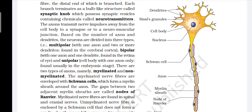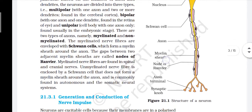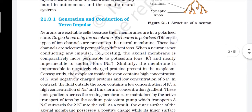Each branch terminates as a bulb-like structure called synaptic knob, which possesses synaptic vesicles containing chemicals called neurotransmitters. The axon transmits nerve impulses away from the cell body to a synapse or neuromuscular junction. Based on the number of axons and dendrites, neurons are divided into three types: multipolar (with one axon and two or more dendrites, found in the cerebral cortex), bipolar (with one axon and one dendrite, found in the retina of the eye), and unipolar (cell body with one axon only, found usually in the embryonic stage). There are two types of axons: myelinated and non-myelinated. Myelinated nerve fibers are enveloped with Schwann cells which form a myelin sheath around the axon. The gaps between adjacent myelin sheaths are called nodes of Ranvier. Myelinated nerve fibers are found in spinal and cranial nerves. Unmyelinated nerve fibers are enclosed by a Schwann cell that does not form a myelin sheath and are commonly found in the autonomic and somatic neural systems.